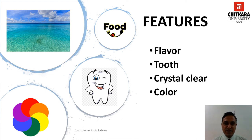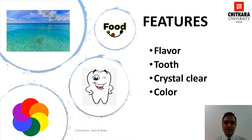The next grading parameter is tooth. Tooth is the density or the elasticity of the jelly. The jelly should be firm enough to hold the desired shape, yet once it is in the mouth, it should dissolve immediately. The jelly should not be rubbery or chewy.